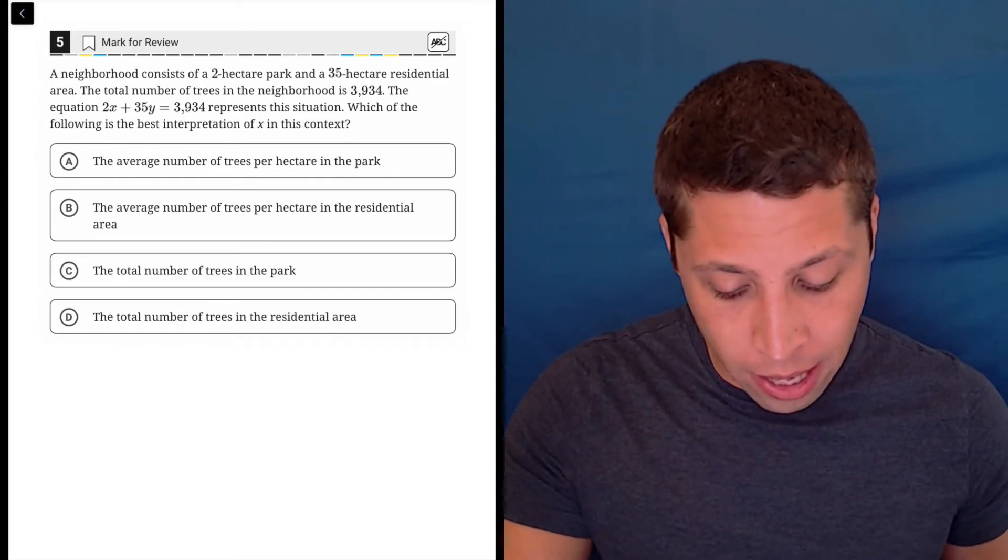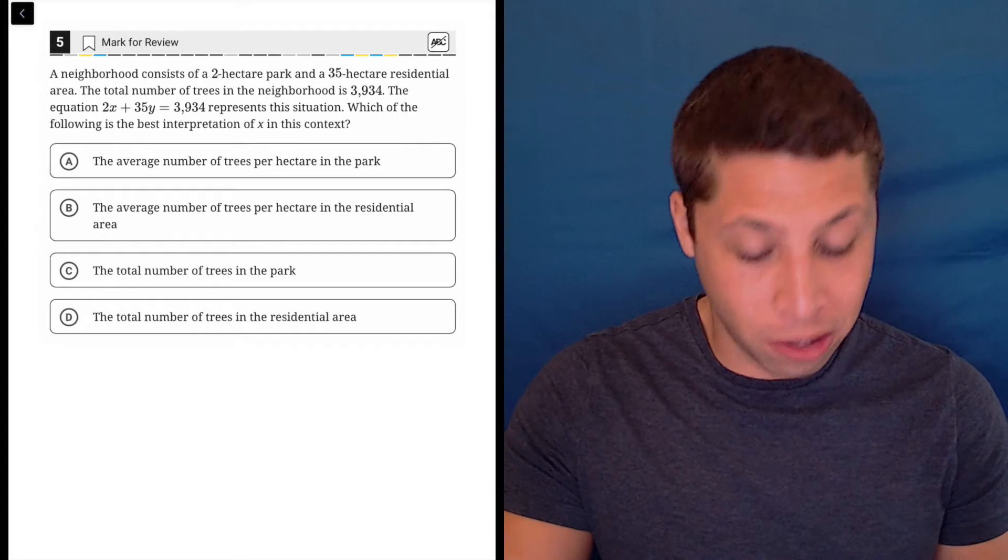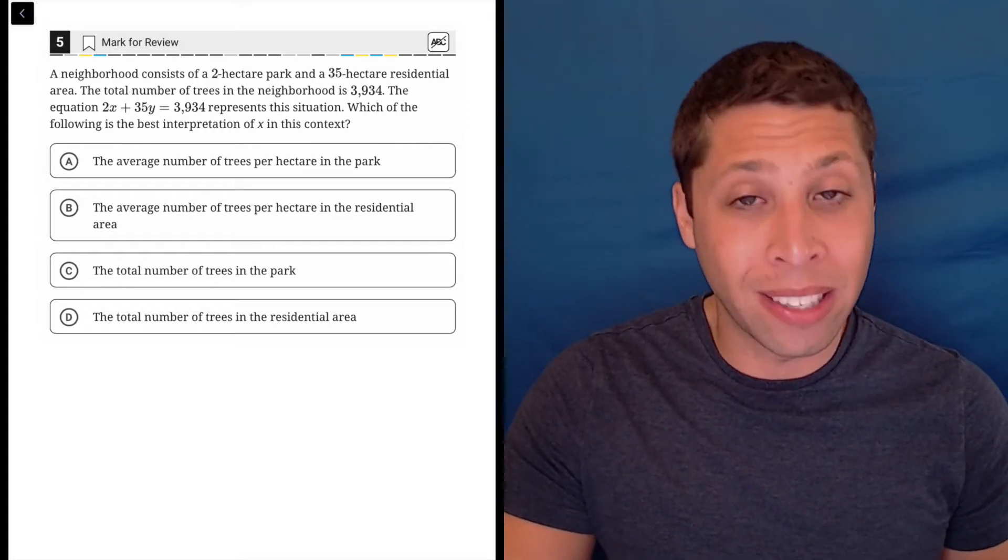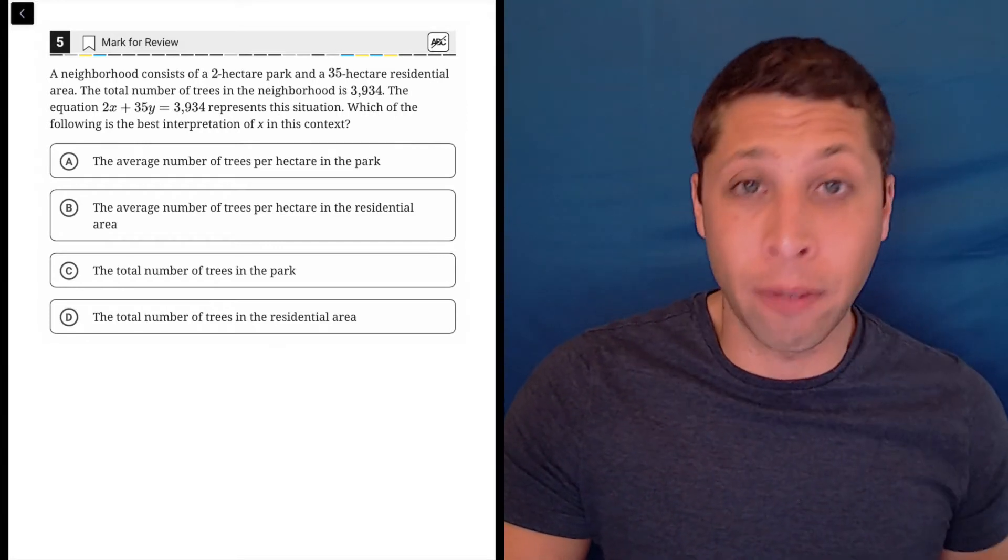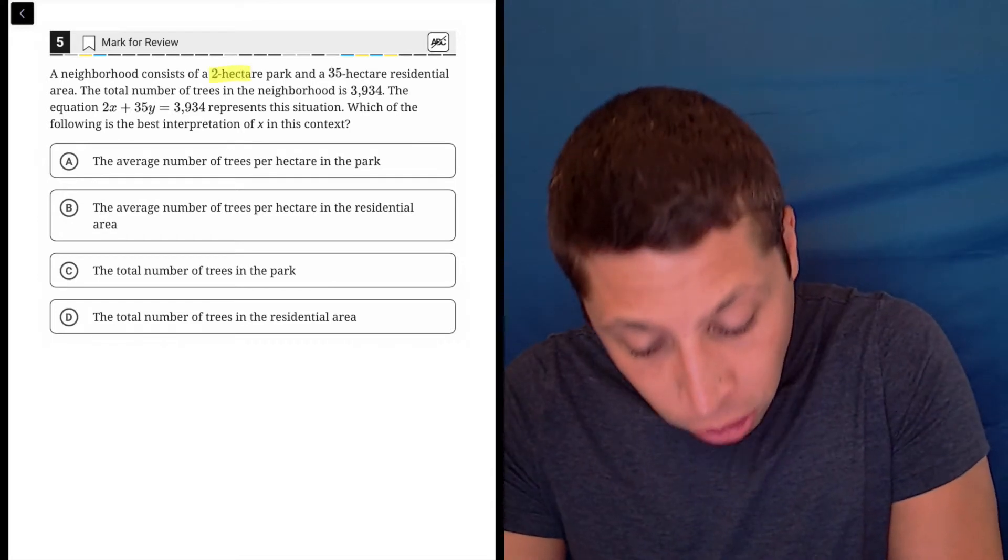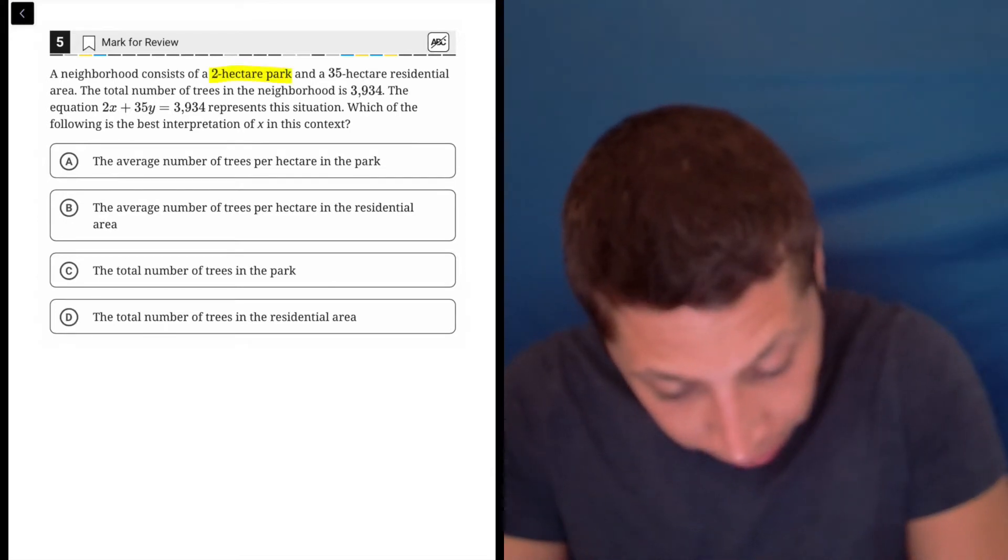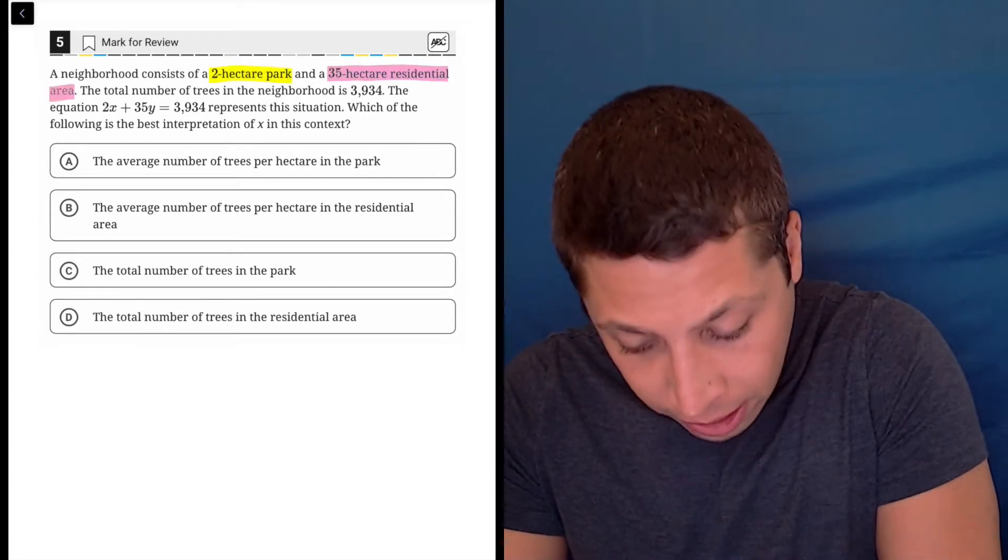But the answer choices tell me that there's two things going on, right? There's a park and there's a residential area. And the beginning of the question tells us that too - there's a two-hectare park and there is a 35-hectare residential area.